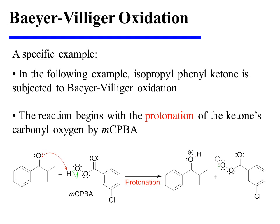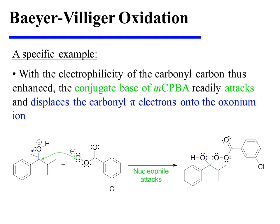Now let's turn our attention to a specific example. Isopropyl phenyl ketone is subjected to Baeyer-Villiger oxidation. The reaction begins with the protonation of the ketone's carbonyl oxygen by MCPBA. With the electrophilicity of the carbonyl carbon thus enhanced, the conjugate base of MCPBA readily attacks and displaces the carbonyl pi electrons onto the oxonium ion.